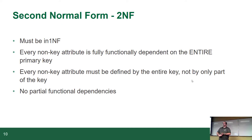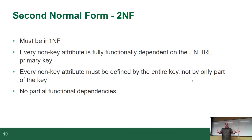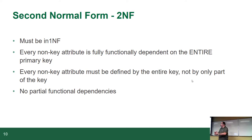Second normal form is where we start hearing some of those more cryptic descriptions. The first rule is easy to remember: it must be in first normal form — you can't be in second normal form unless you're in first normal form. The second rule is every non-key attribute is fully functionally dependent on the entire primary key. That means you're not allowed to have columns that don't depend on the entire primary key. Every non-key attribute must be defined by the entire key and not only part of it. There are no partial functional dependencies — all three points mean the same thing.